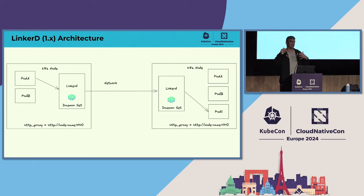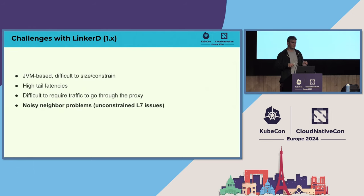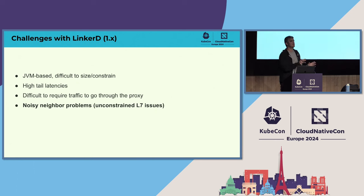Traffic goes to the proxy, and the proxy would then do things like timeouts, retries, circuit breaking, service discovery, and TLS. This proxy was built in Scala and ran on the JVM. There are some drawbacks specific to that implementation — you couldn't size it, the garbage collection in the JVM was too big, and you wouldn't use it as a sidecar.